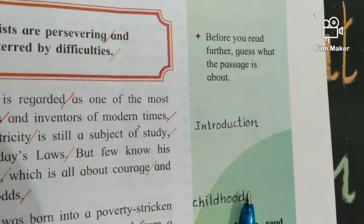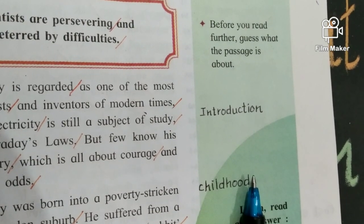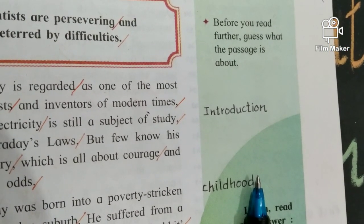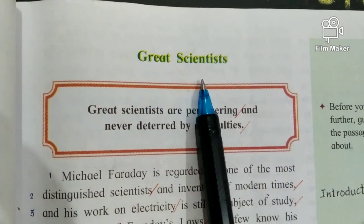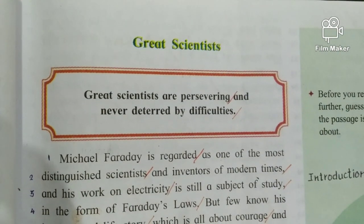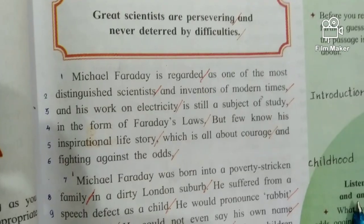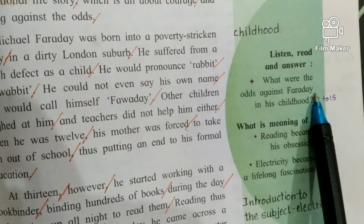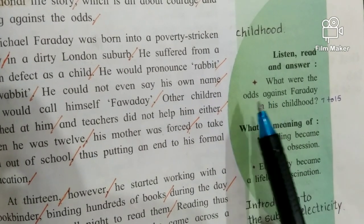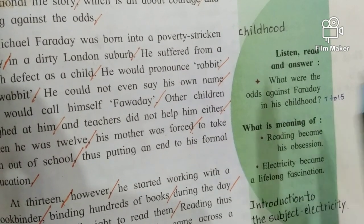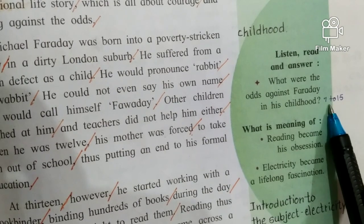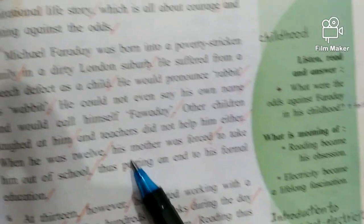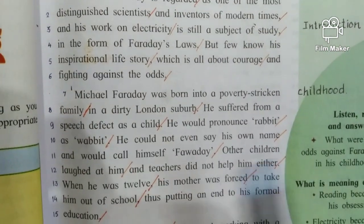Now we shall do the margin questions given in the book. The first question is: before you read further, guess what the passage is about. Anyone will guess the passage must be about a great scientist, because the title itself suggests it — that this passage will be about a great scientist.